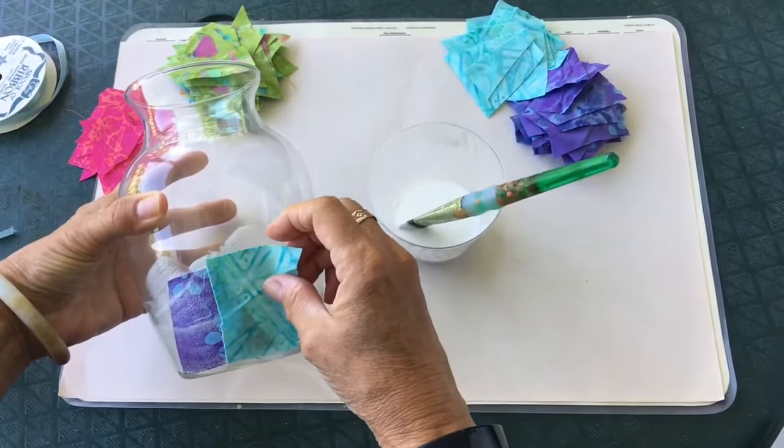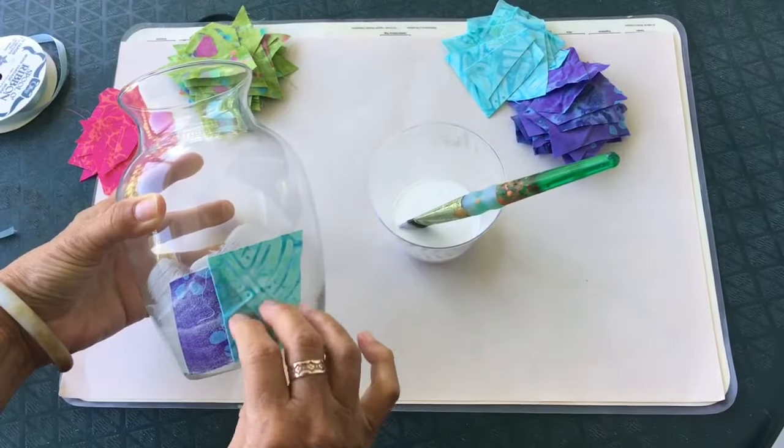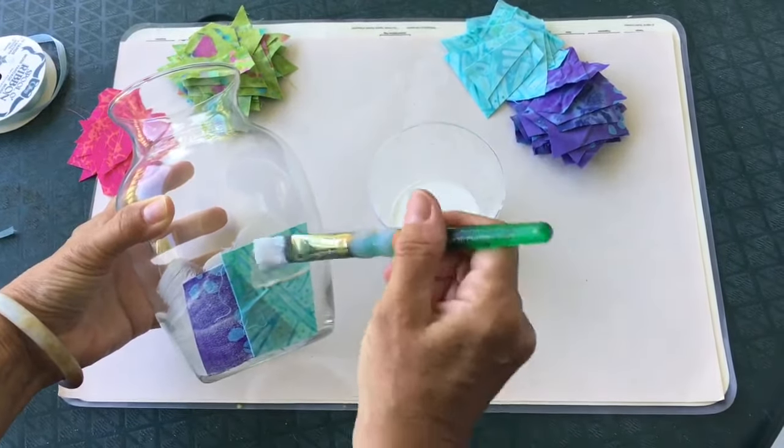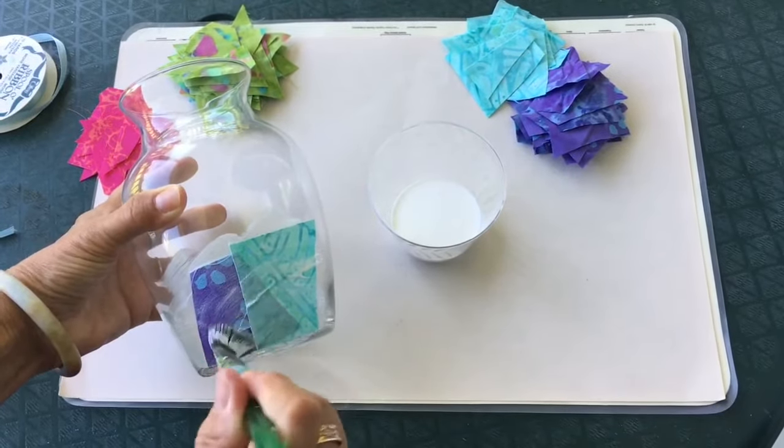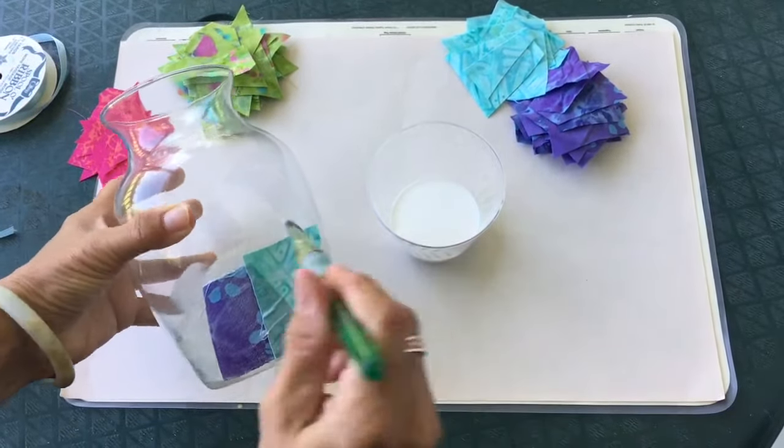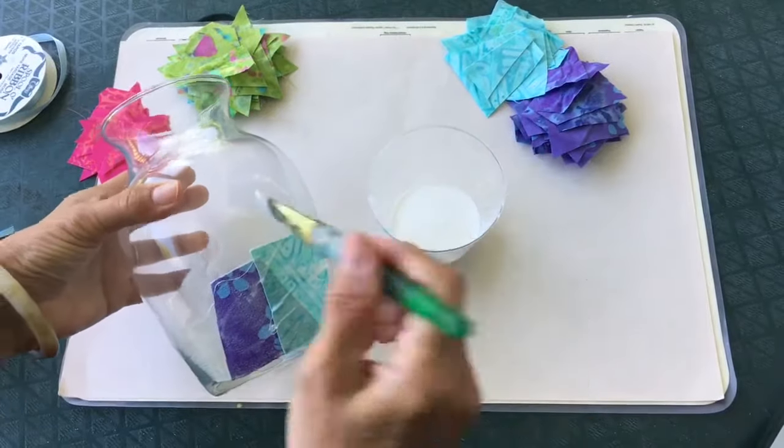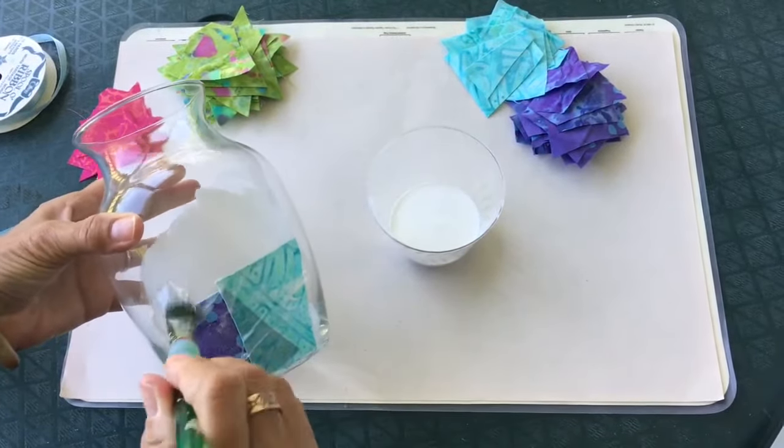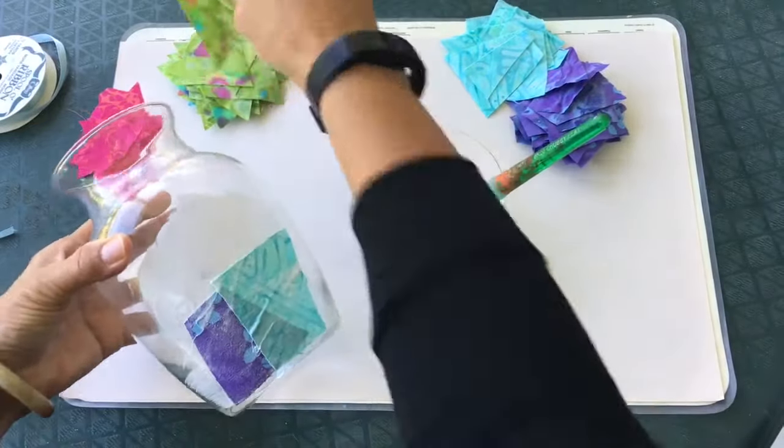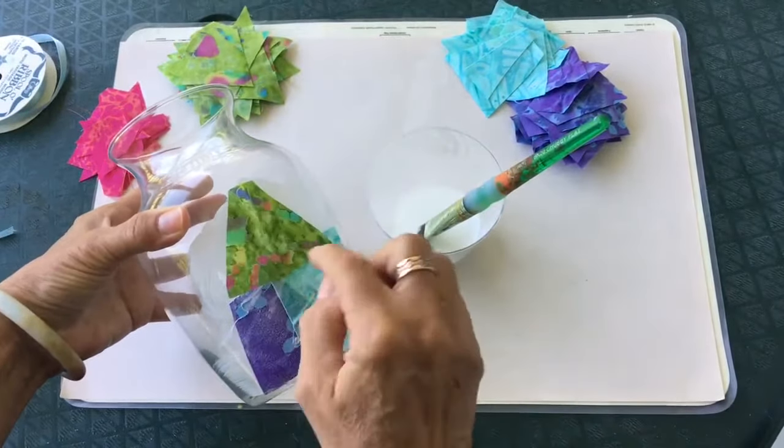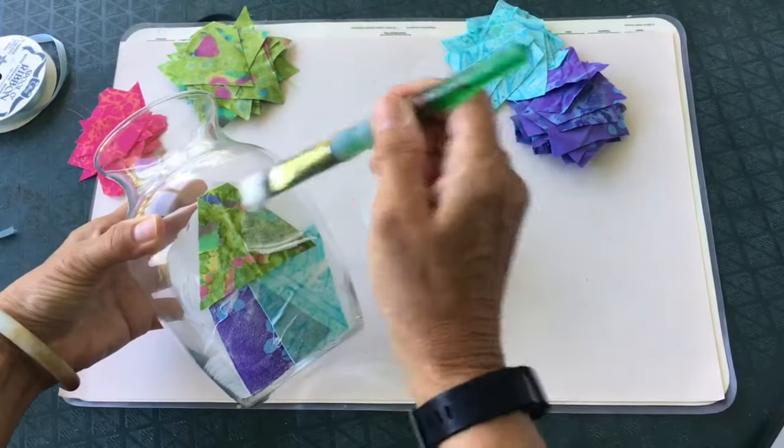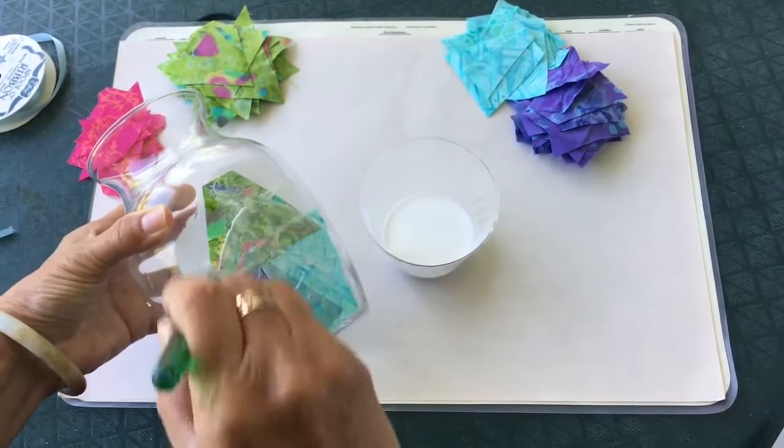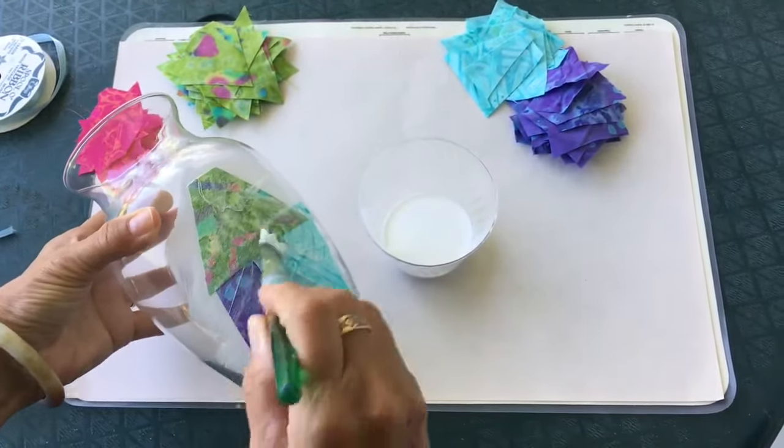And you'll want to overlap that probably. Tap that into place and brush it on top. And so far my fingers are actually pretty clean because I'm not touching the glue yet. Brush, brush, brush. Tap it into place and then brush it on top. It's really just as easy as that.